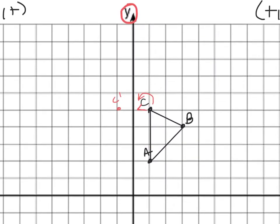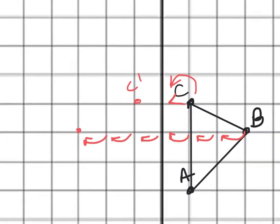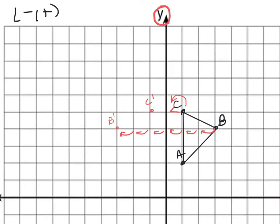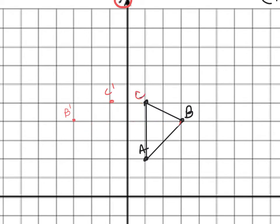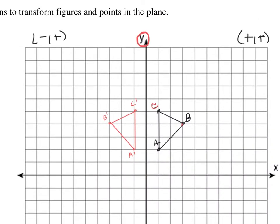For B, I have to count how far away B is from the y-axis: 1, 2, 3. So I'm going to go 3 out, and here's B prime. Now I'll count how far away A is from the y-axis — A is only one jump away — so I go out 1 from the y-axis, and that's A prime. I'm now going to connect those with nice straight lines, and we just graphed triangle A prime, B prime, C prime.